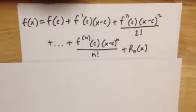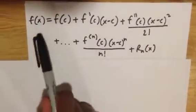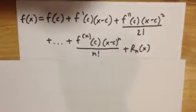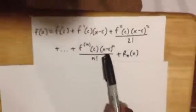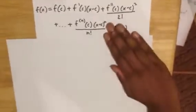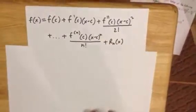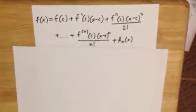So first we start with Taylor's theorem, and that says f of x, a function, can be approximated by using a polynomial. And this is Taylor's polynomial. So this would be Taylor's approximation right up to here, and then we have an error of r sub n of x.